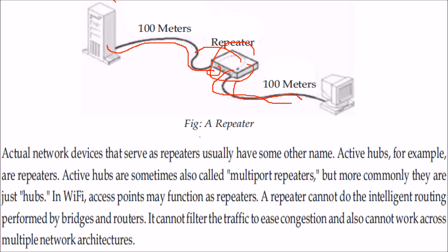Network devices that serve as repeaters usually have other names. Active hubs are repeaters, and they are sometimes called multi-port repeaters, though more commonly they are simply called hubs.